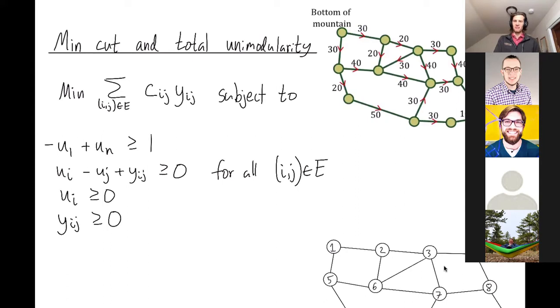So as a very mean competing ski resort, what's the least amount of money I could pay to disable enough ski lifts so that nobody can get from the bottom of the mountain to the top? I'm realizing this is a pretty mean application. So in this particular example you could pay 60 bucks to separate the bottom of the mountain from the top of the mountain.